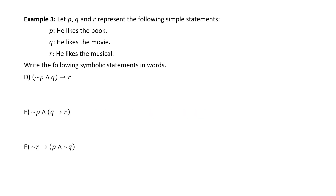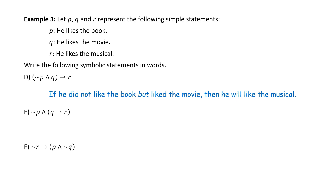Part D: (∼P ∧ Q) → R. P is 'he likes the book,' so with negation: 'he does not like the book'; Q is 'he likes the movie'; the arrow points to R. We write: 'If he did not like the book but liked the movie, then he will like the musical.'